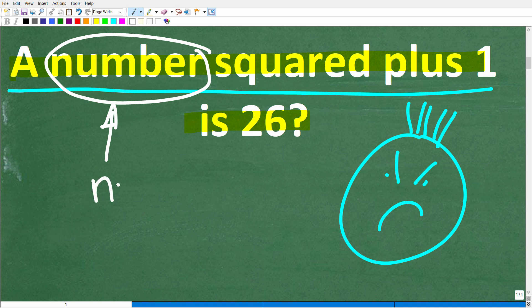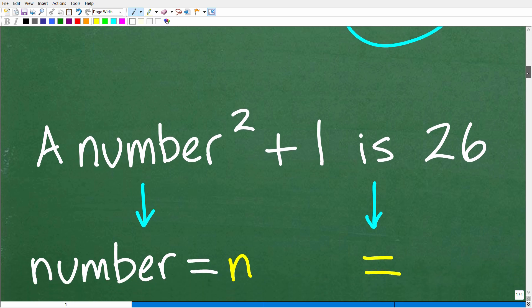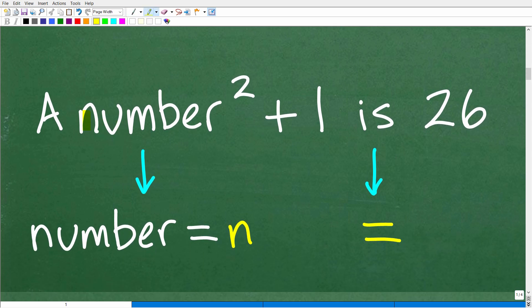In this case, I'm going to use the variable n to represent this number. What we need to do is translate this verbal sentence into an algebraic equation. So that is step one. A number or n squared, plus is the same thing as the addition operation, so plus 1 is 26.